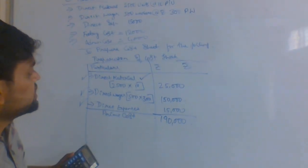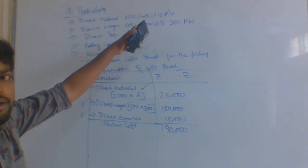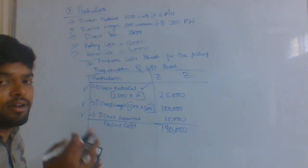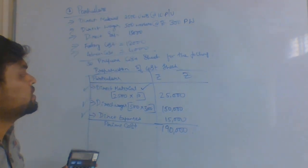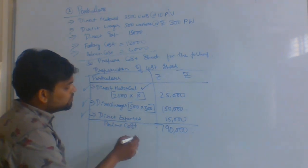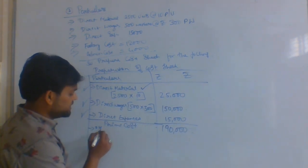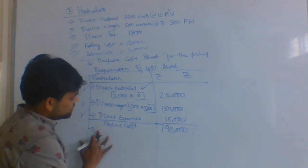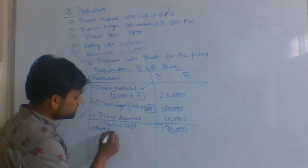The tricky part here is they are given direct material per unit. They are given per unit — you need to calculate for 2500 units. Once you get prime cost, we will move to overheads next.